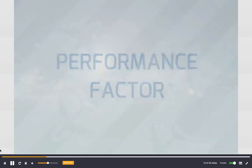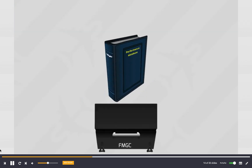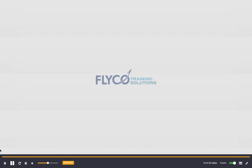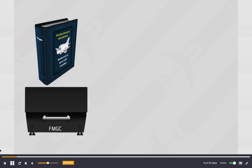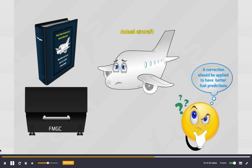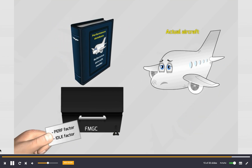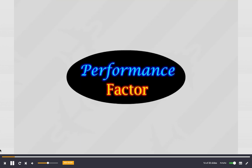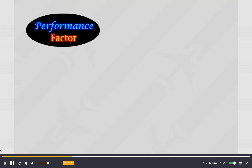The FMS performance computation is based on a reference model stored in the performance database. Airlines cannot modify any data in the performance database. However, with time, the actual aircraft drag and engine performance deviate from the reference model due to the aircraft aging process. Therefore, a correction should be applied for enabling better fuel predictions — this is the purpose of the performance and idle factors.